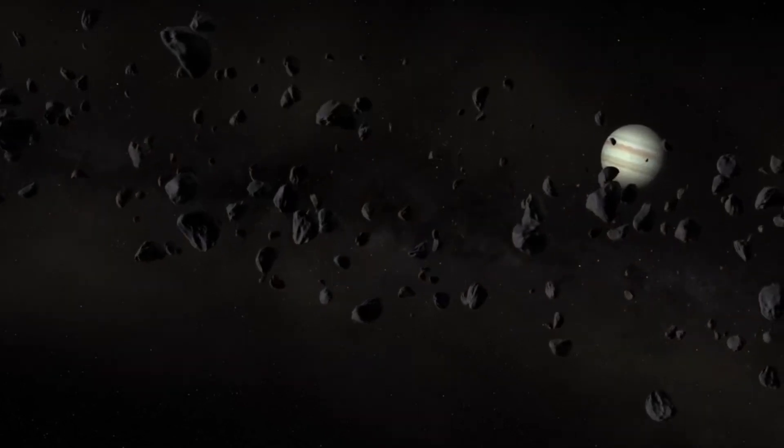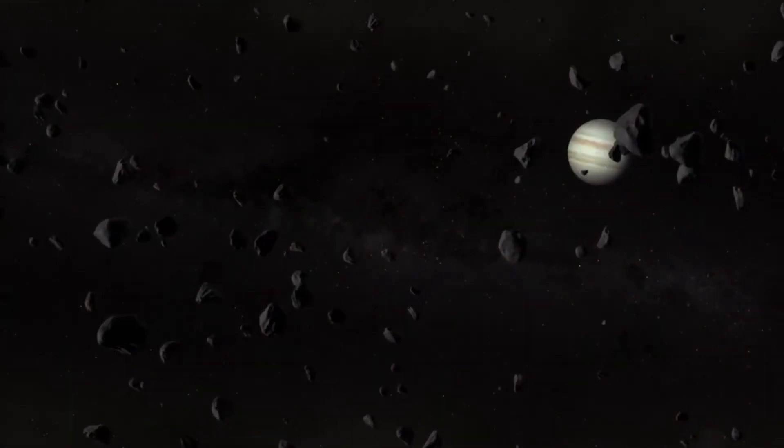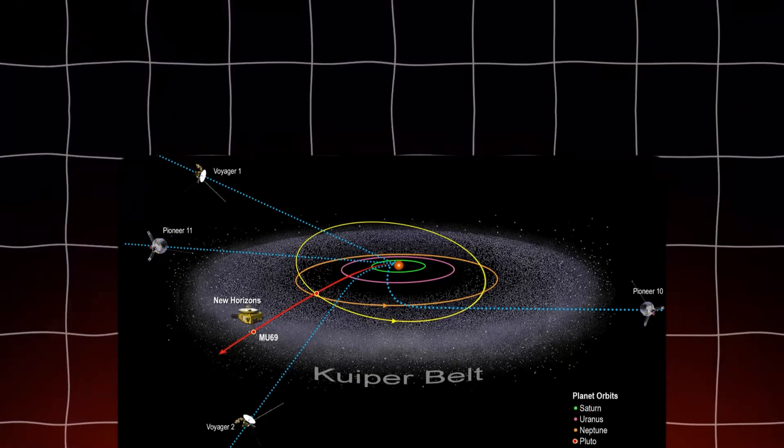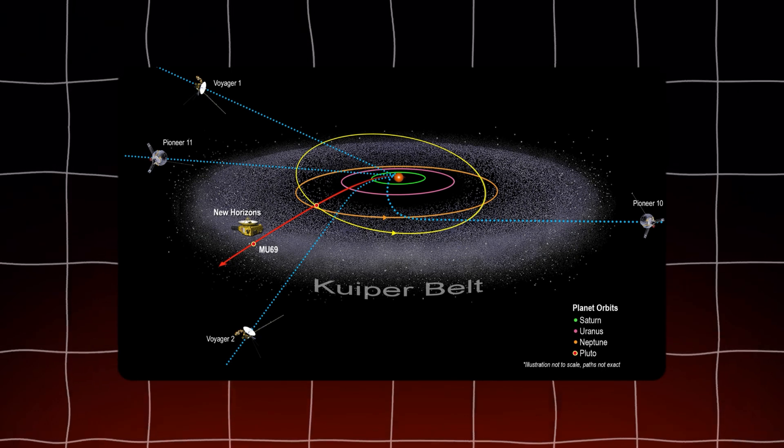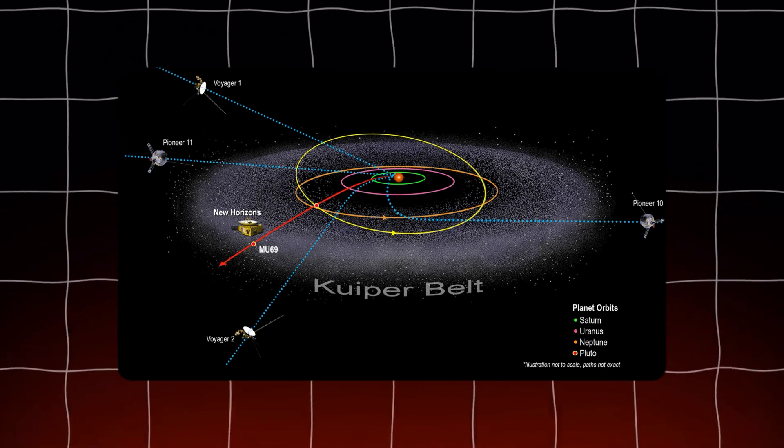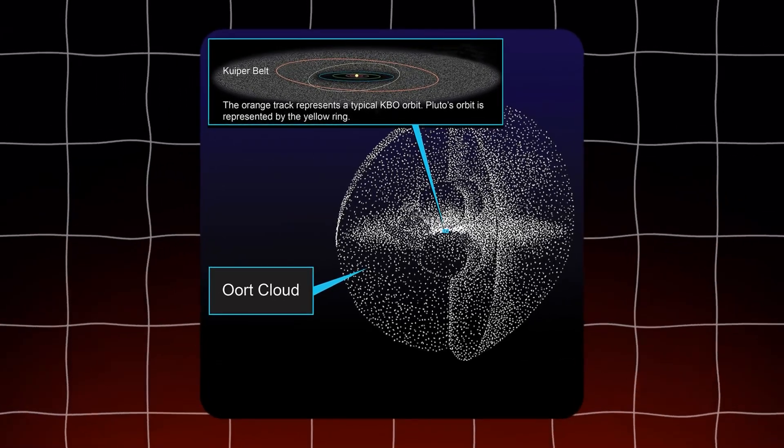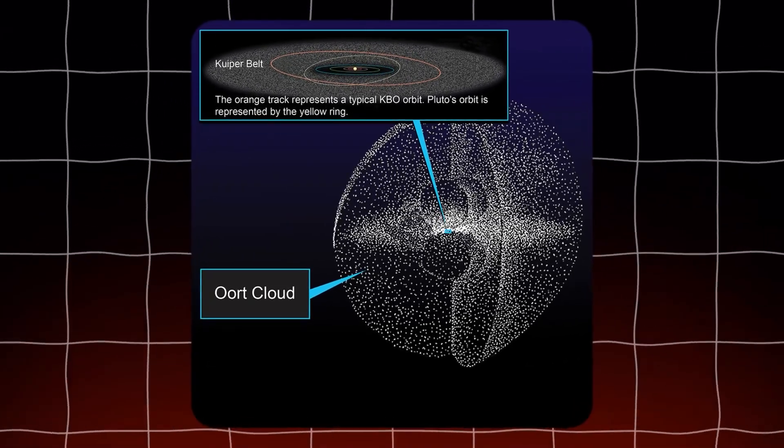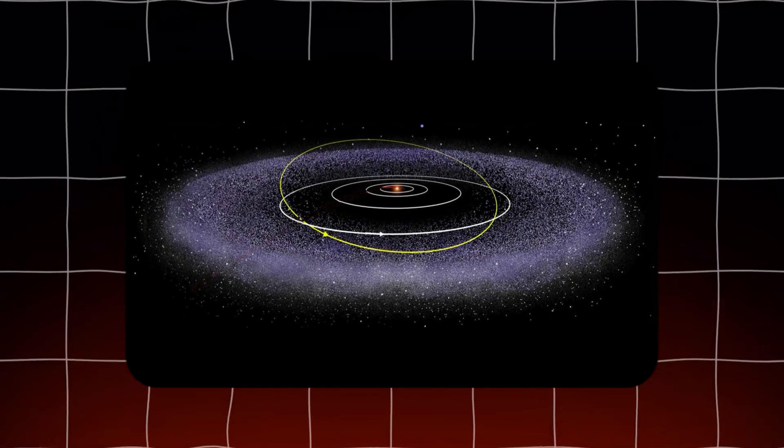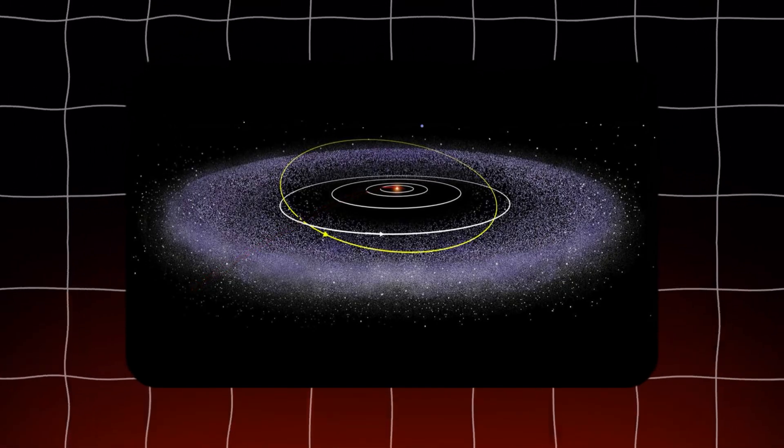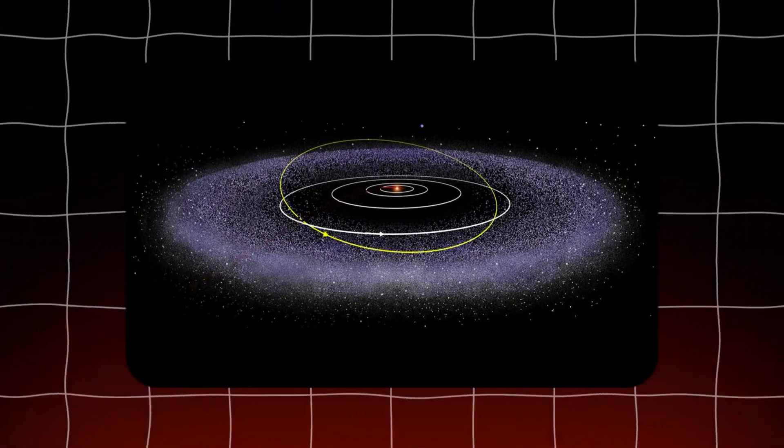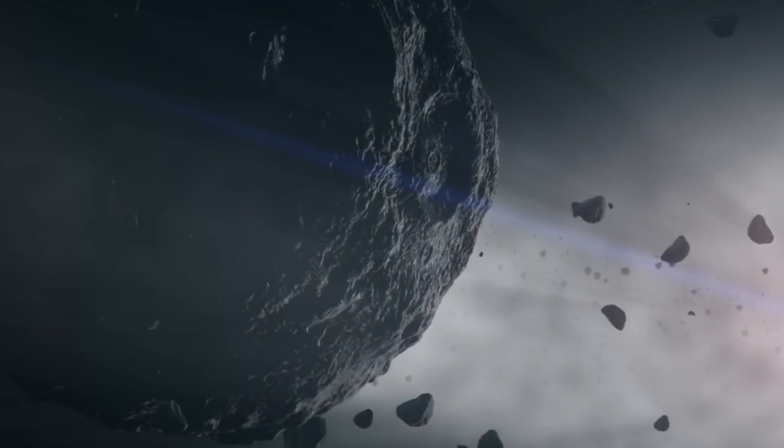Further evidence of this alignment can be seen in the distribution of objects within our solar system. The Kuiper belt, a region of icy bodies beyond Neptune, also aligns with the plane of the planets. Even the more distant Oort cloud, though more spherical, hints at this primordial disk's influence. The fact that these structures align so well with a planetary plane reinforces the idea that a single organized process shaped them all.